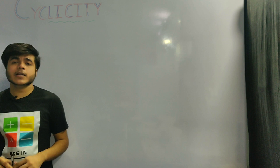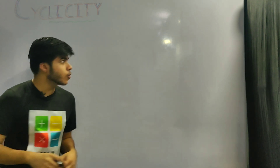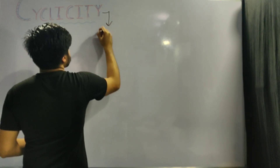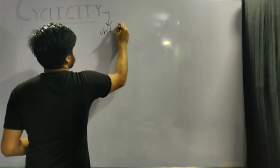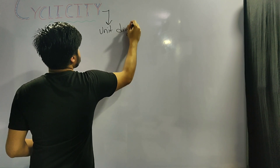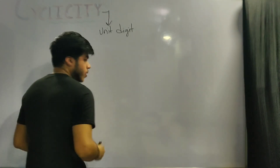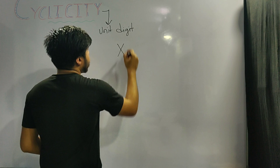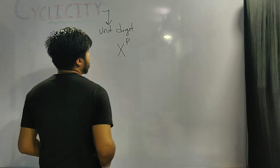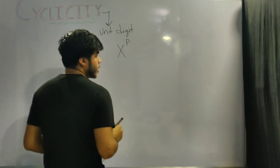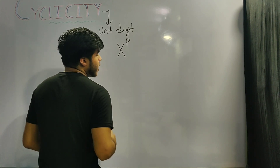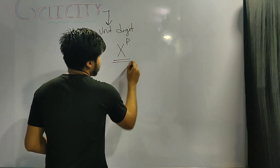Before diving into the concept, let us first find out what cyclicity means. Cyclicity is basically a concept by which we can find out the unit digit of any number raised to any arbitrary power. What I'm trying to say is that if I'm given a number x and I raise it to the power p, and I'm told to find out its unit digit, then by the help of cyclicity I can easily find out its unit digit.